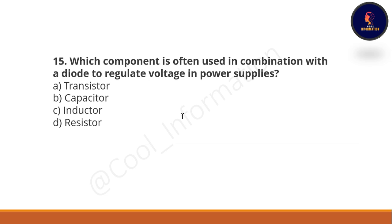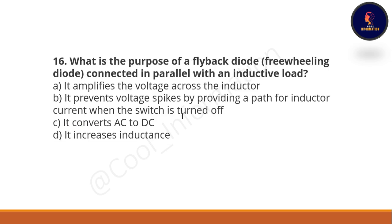Next question: Which component is often used in combination with a diode to regulate voltage in power supplies? Option A: transistor. Option B: capacitor. Option C: inductor. Option D: resistor. The correct option is resistor.